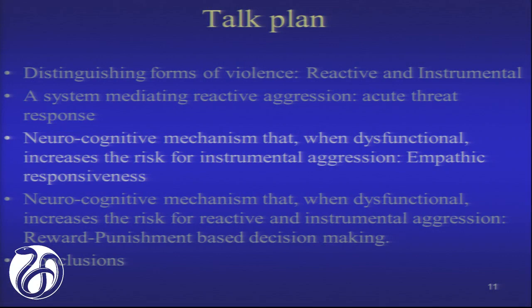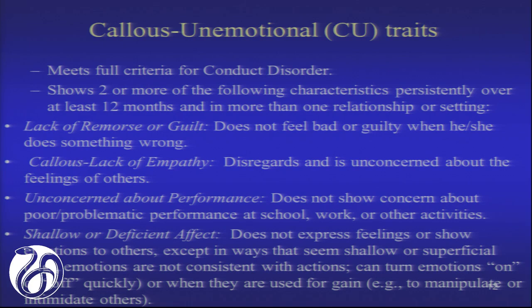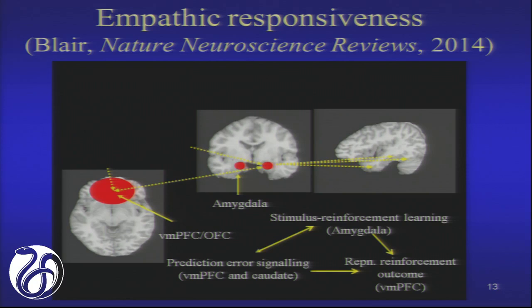The second system, when dysfunctional, increases the risk for instrumental aggression — and that's really the empathic responsiveness I alluded to with the device-as-weapon example. Clinically, this manifests most directly as callous-unemotional traits, which appear in DSM-5 as 'low prosocial emotions': a lack of remorse or guilt, lack of empathy, and lack of attachment to significant others. The circuitry we're talking about is primarily the amygdala and its connections up into ventromedial prefrontal cortex.